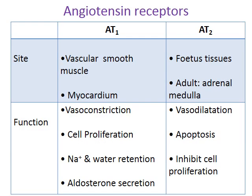How does angiotensin 2 produce its reaction? By binding with its own receptor. There are two types of receptors: angiotensin type 1 and angiotensin type 2. The majority of functions of angiotensin 2 are generated through binding with the angiotensin type 1 receptor. Type 1 receptors are present at various sites like vascular smooth muscle and myocardium, while type 2 receptors are present at fetal tissue and in adults at the adrenal medulla. Functions produced through type 1 receptor stimulation include vasoconstriction, enhanced cell proliferation, sodium and water retention, and enhanced aldosterone secretion, while the totally opposite functions — vasodilation, apoptosis, and inhibition of cell proliferation — are generated through type 2 receptor stimulation.